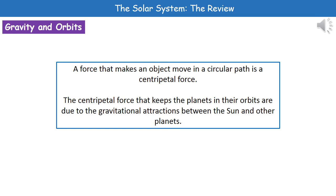If we've got a force that's making an object move in a circular path, that's referred to as the centripetal force. It's this centripetal force that's going to keep the planets in their orbits, and what we find is that the centripetal force is caused by the gravitational attractions between the sun and the other planets. Any large body has the force of gravity, so the sun — which is amazingly big — has a very strong pull of gravity, and each of the planets also has its own pull of gravity, keeping them all in their orbits.